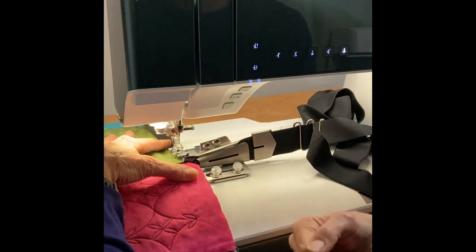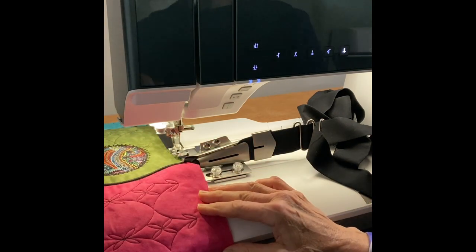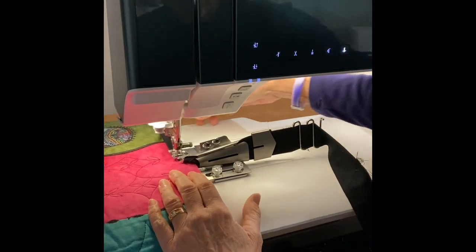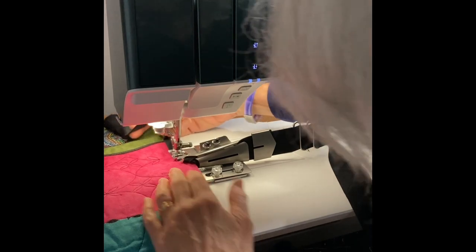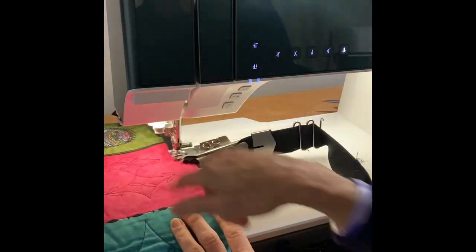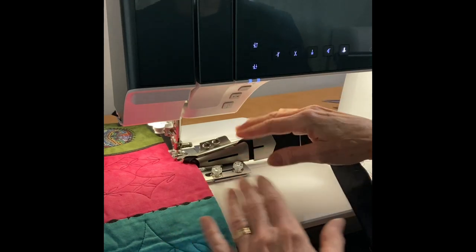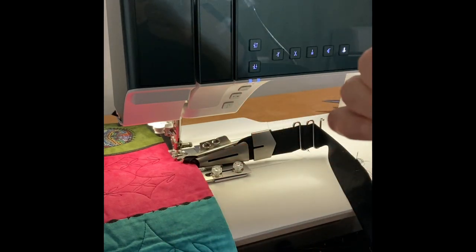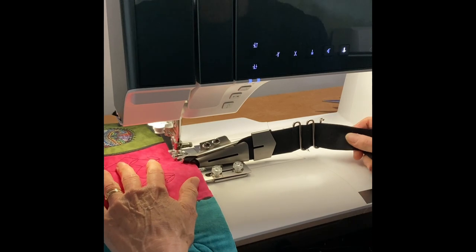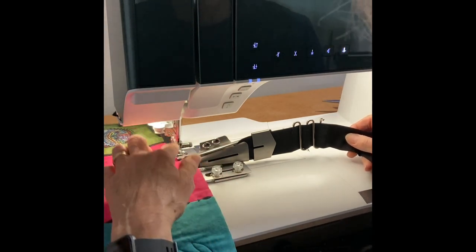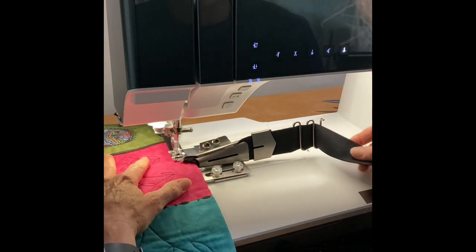Then I will begin to sew down. Before I start sewing, I want to make sure that I have enough of a tail here on the end so that when I go all the way around, I will have an easy time joining the beginning and the end. Now I have my needle moved over and my fabric at that right angle. I'm going to start sewing.